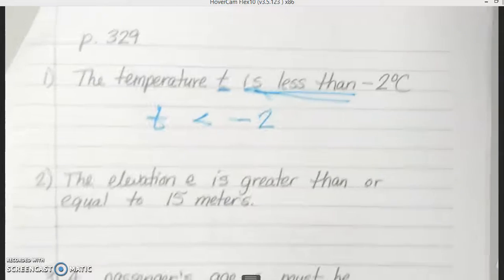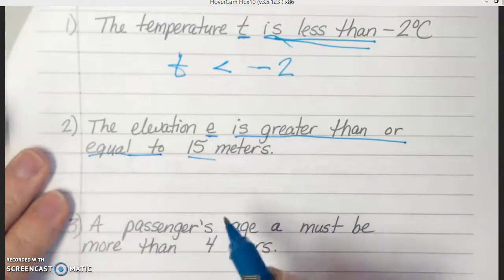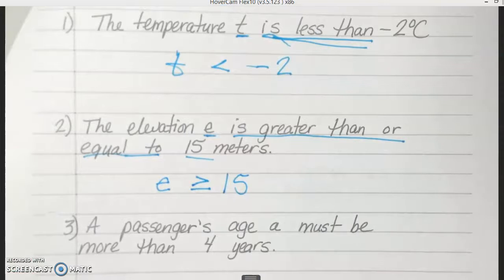Alright, number 2. The elevation E, so they want us to use E for elevation here, is greater than or equal to 15. So E is greater than or equal to 15. And then it also wants us to tell what kind of number would E have to be. So if we're talking about elevation, and it's going to be greater than 15, E could be what number? It could be any number that's positive, right? Because 15 is already a positive number. So there's no way we're going to have a negative number. So E would have to be any positive number. It could be 15 and a half, 16, 16.5. It could be a decimal. It could be a fraction. As long as it's a positive number that's equal to or above 15. Does that make sense?